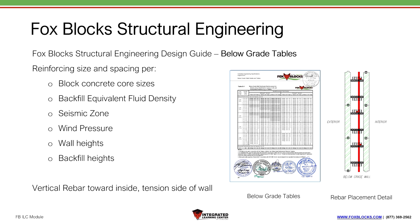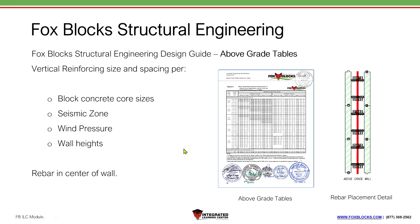The below-grade tables show the backfill fluid density found in the back of the book, seismic zone, wind pressure, wall heights, and backfill heights, then indicate what rebar is required and where to place it. Above-grade tables work almost identically, except they account for no backfill pressure and unknown tension side — so rebar is placed in the center of the wall. Just follow the table; the cover sheet for this section shows where to put rebar and other key details.